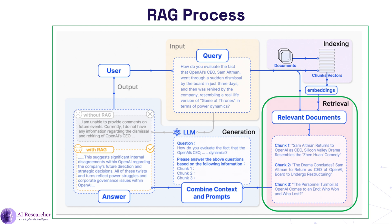The next phase is document retrieval. The objective is to fetch the most relevant information from the indexed database based on the query input. When a query is input into the system, it is also converted into a vector, and the system performs a similarity search — for example using cosine similarity — in the vector database to find and retrieve the top-k vectors that most closely match the query vector. This step ensures that information relevant to the query is selected for response generation. For example, if the query is 'What are the latest treatments for type 2 diabetes?', the system converts this query into a vector and retrieves the top paragraphs discussing recent advancements or studies on type 2 diabetes treatment.